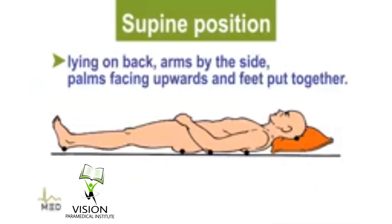The second position is supine position. When a person is lying on the back, arms by the side of the body, palms facing upwards, and feet put together, the position is called supine position. In the image, we can clearly see the position.